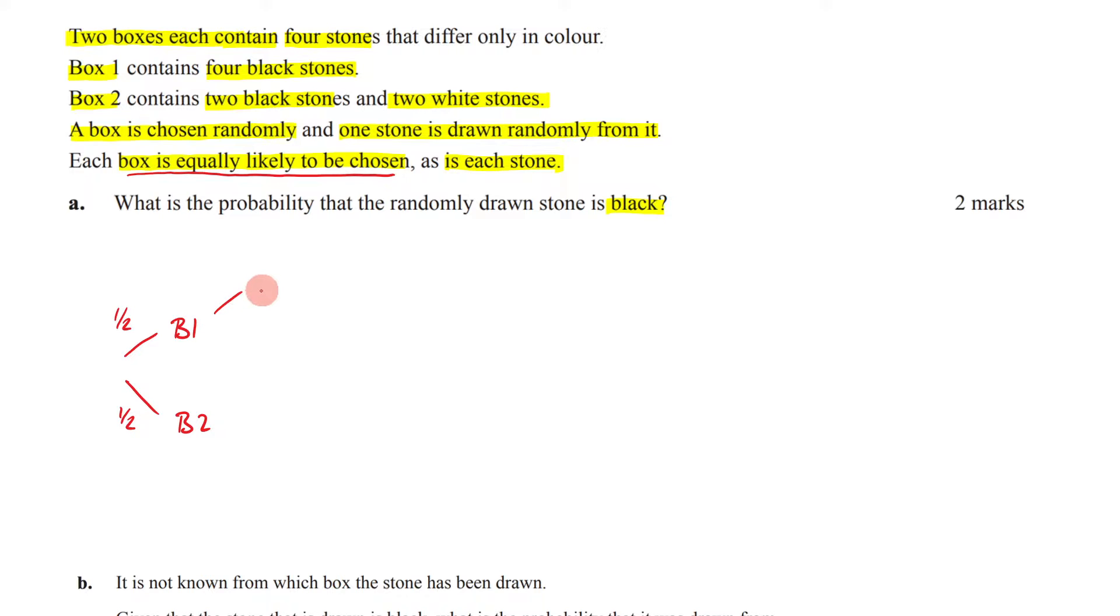If you've got box one, what's the probability of you getting a black stone? Or what's the probability of you getting a white stone? Well, you've been told that there are four black stones in box one, and that's all there are. So that means there's 100% probability that you're getting a black stone out, but there's a 0% probability that you're going to get a white stone, because there are no white stones in box one.